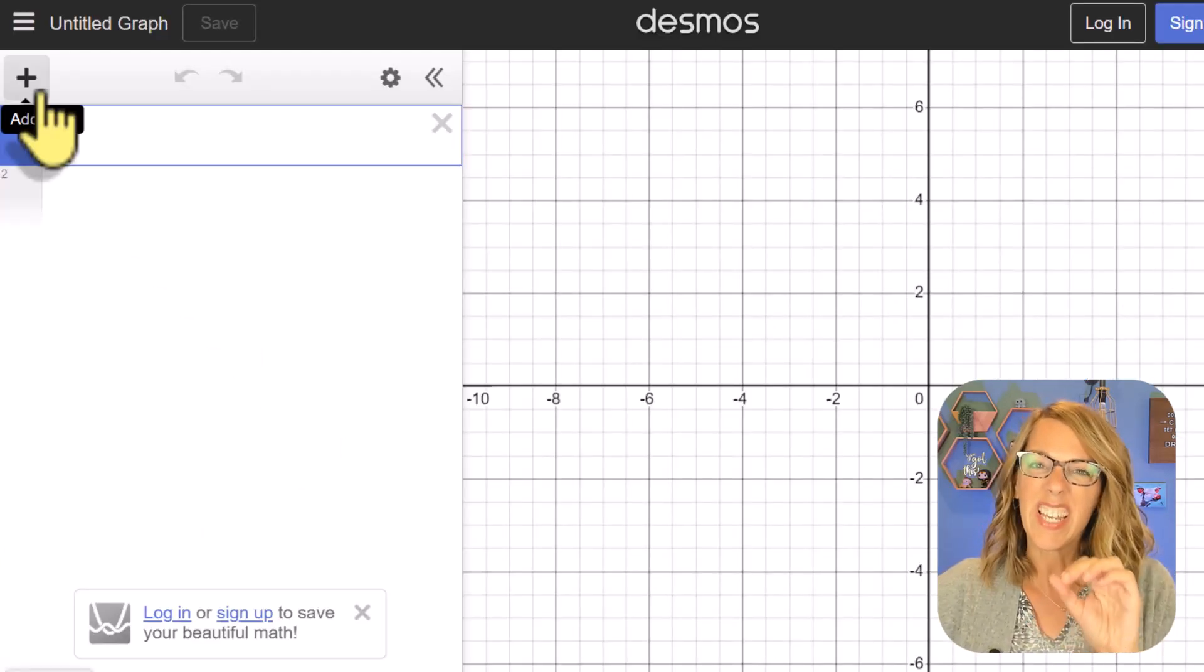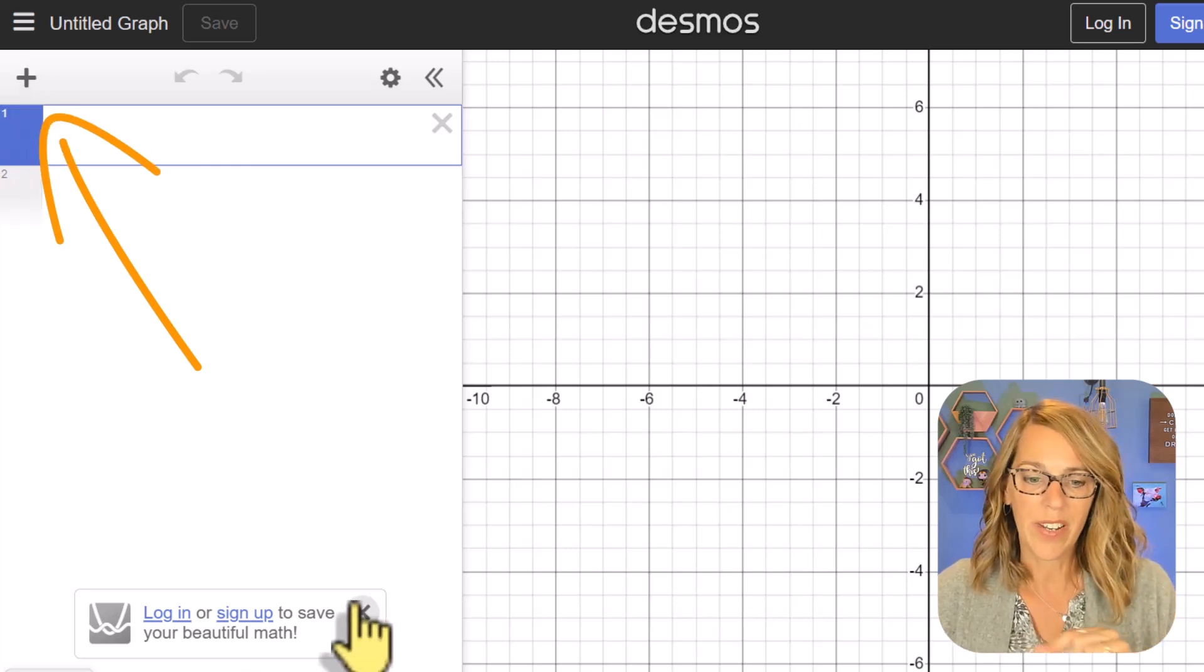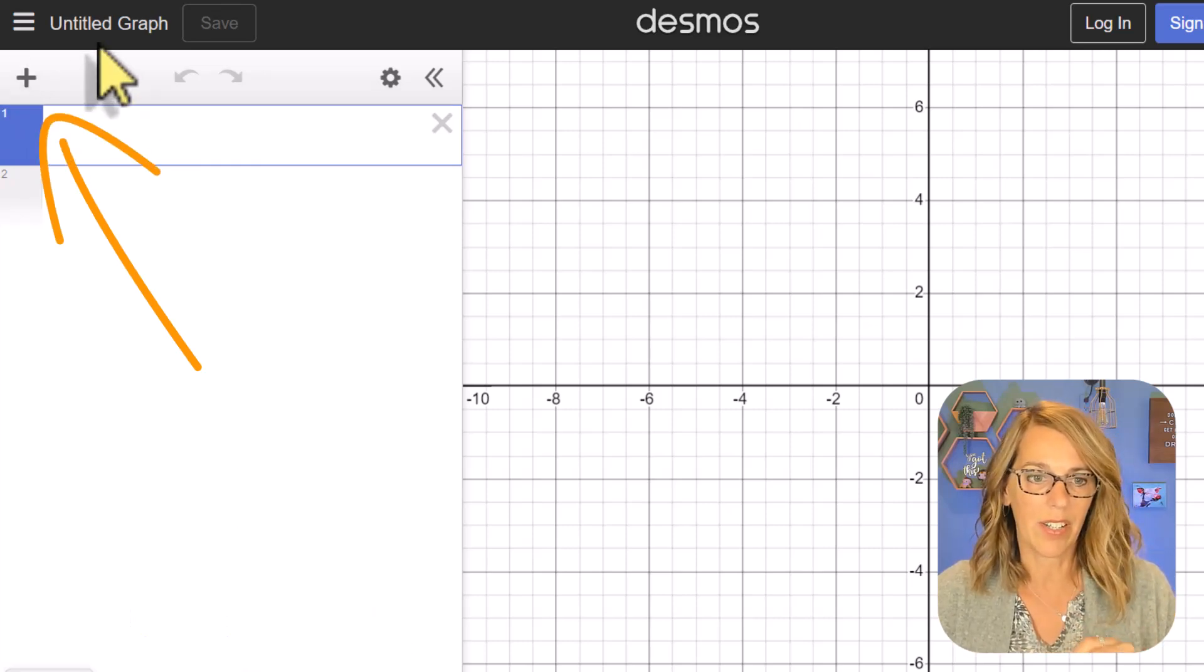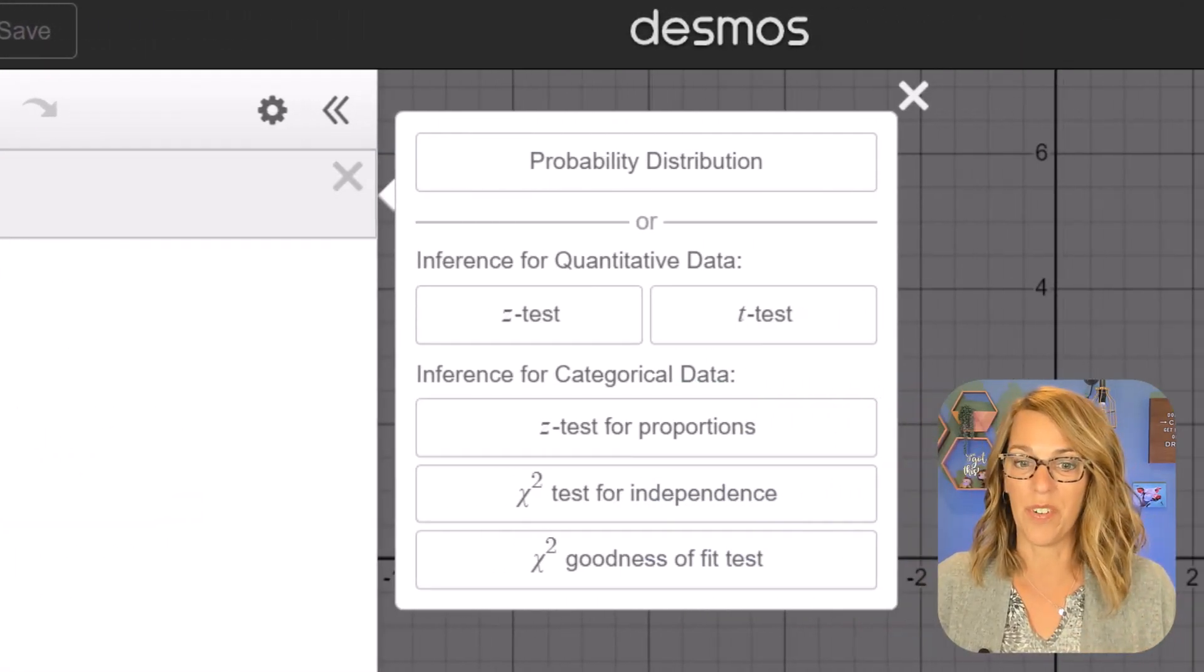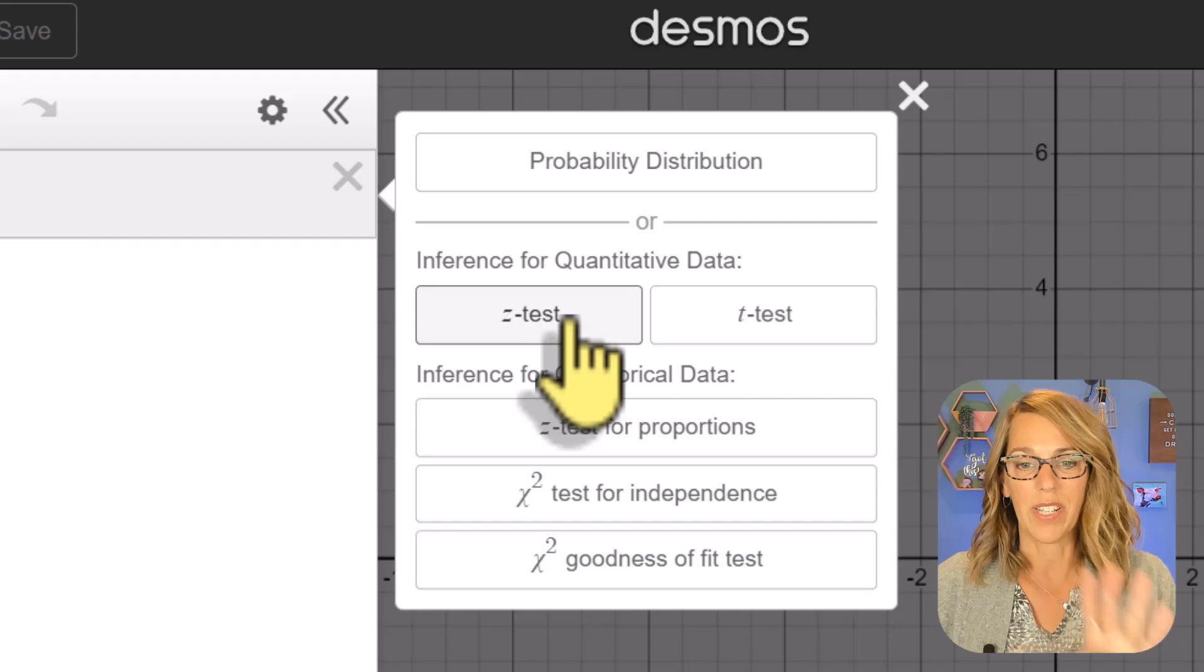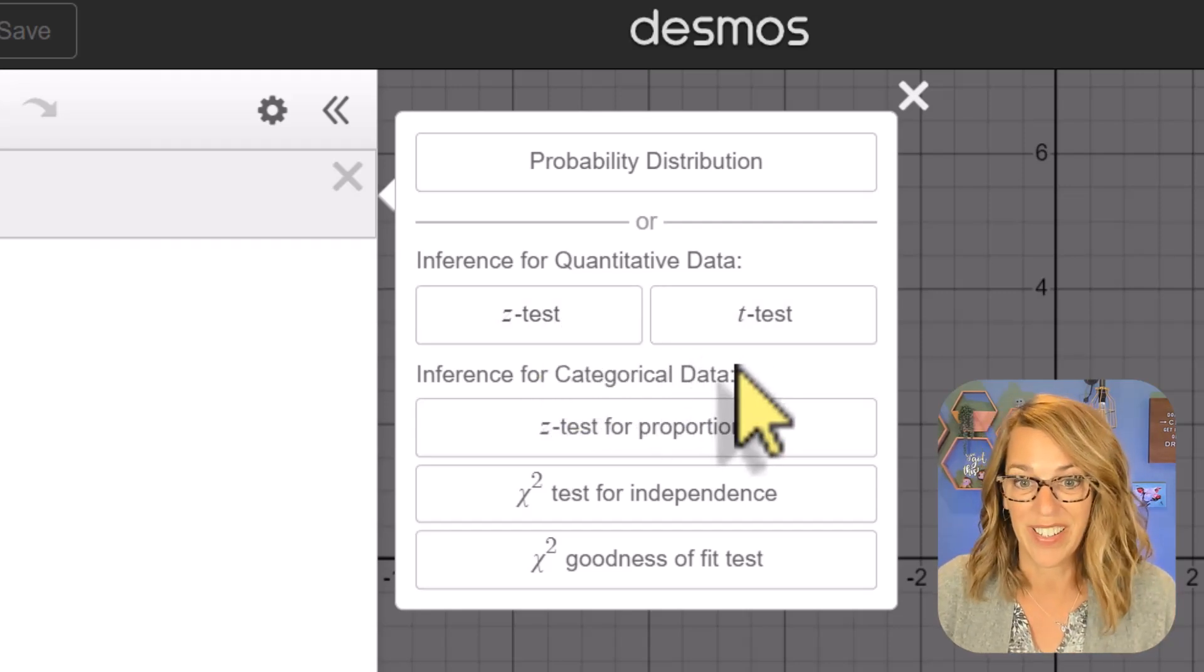We're going to use a tool that we can get to by clicking on the plus sign in this upper left hand corner. Now I'm not logged in. Let me go ahead and just click to close that. I'm going to click that plus sign and then we are looking for this inference tool and you can do it for a z test or a t test. You've got lots of different options here.